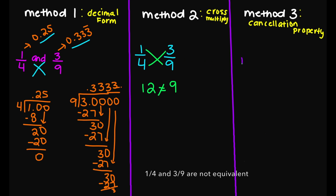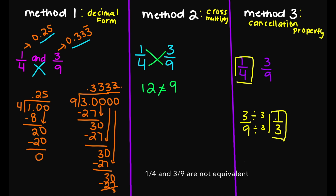And now let's look at method number three — the cancellation property. I cannot simplify 1 over 4 any further, so I'm just going to leave this alone. However, my 3 over 9 — I can simplify that. 3 goes into both the 3 and the 9. So my numerator, we're going to get 1. And my denominator, we're going to get 3. So notice here we have 1 over 3, and then here we have 1 over 4. So again, we know that these two fractions are not equivalent.